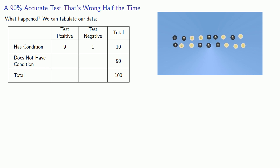And because our test is 90 percent specific, then 90 percent of those without the condition will test negative. That's 81 people. But that also means that 9 people who do not have the condition will test positive. These are the false positive results.